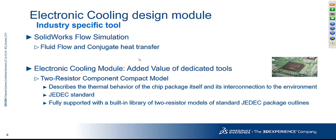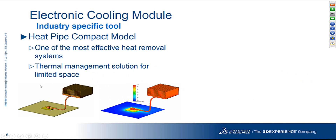This add-on Electronic Cooling module comes with a large set of components. Chips can be represented using a two-resistor component compact model. We have a list of commercially available chips as per JEDEC standard, which can be directly dragged and dropped into the simulation — no need to model them in full detail. Another interesting entity is heat pipes, typically used for extracting heat from hot components like chips inside the electronic system, and ready-made templates are available to simulate these.